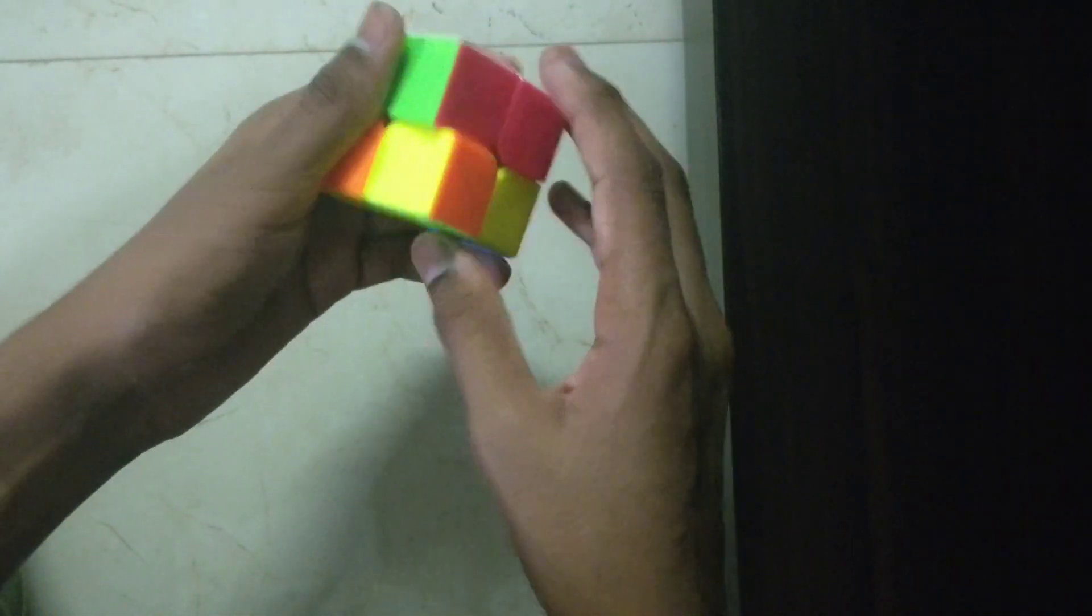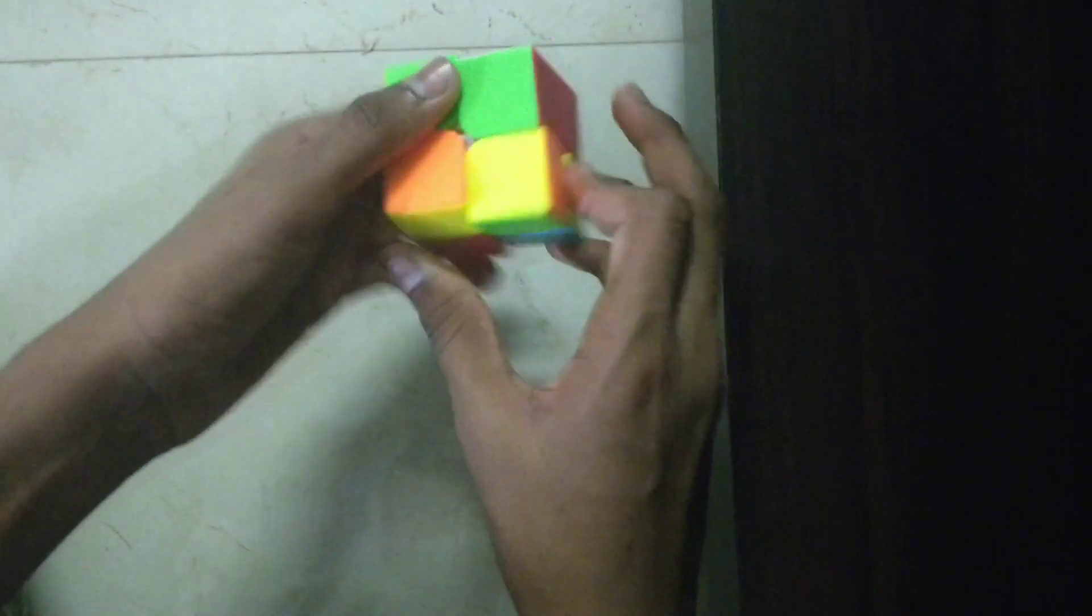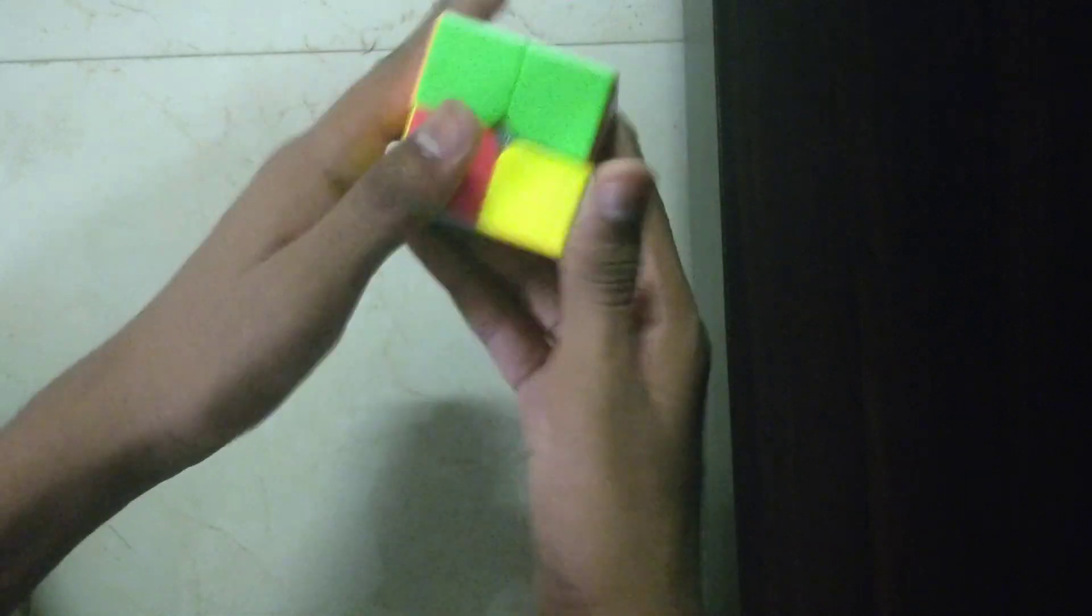So next you should solve the yellow side. There are seven possibilities but we are going to use the 3x3 method. And you will keep the cube like this. And don't turn the cube like the 3x3 one. So I use the same formula.